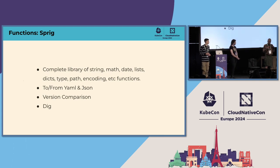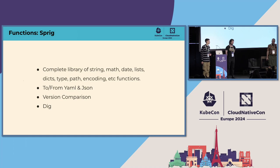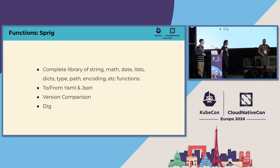For functions, the built-in objects use functions primarily provided by Sprig — an upstream repo providing a complete library including string manipulation, math, dates, lists, and more. Some that I'll highlight: 'fromYaml' and 'fromJson' are really handy. Named templates always return a string, but if you pipe the output through 'toYaml' or 'toJson' and back through 'fromJson,' you end up with a dict — super handy.